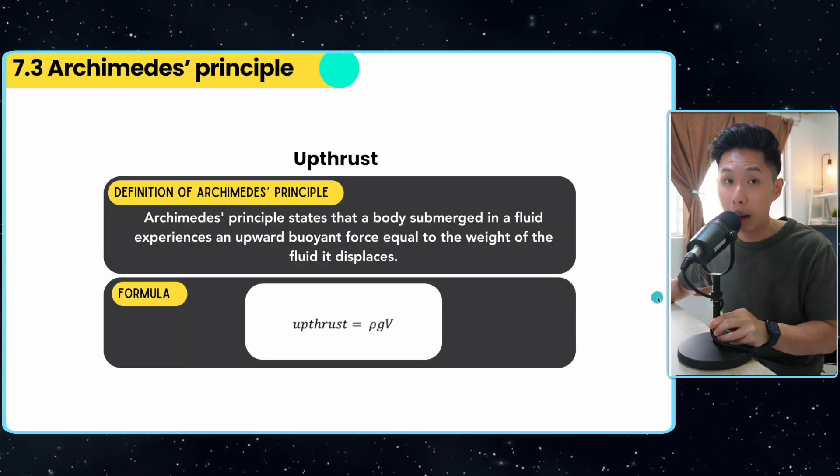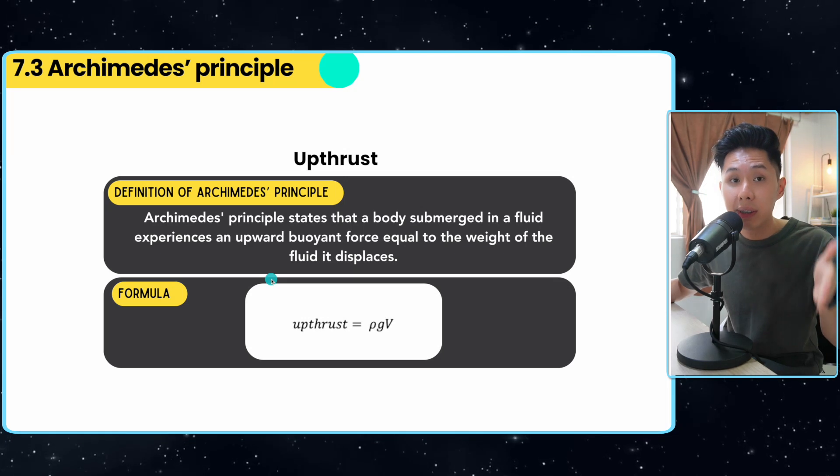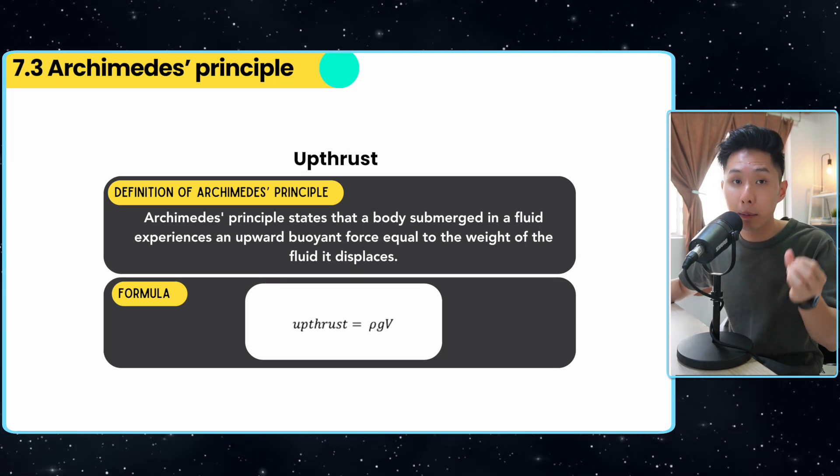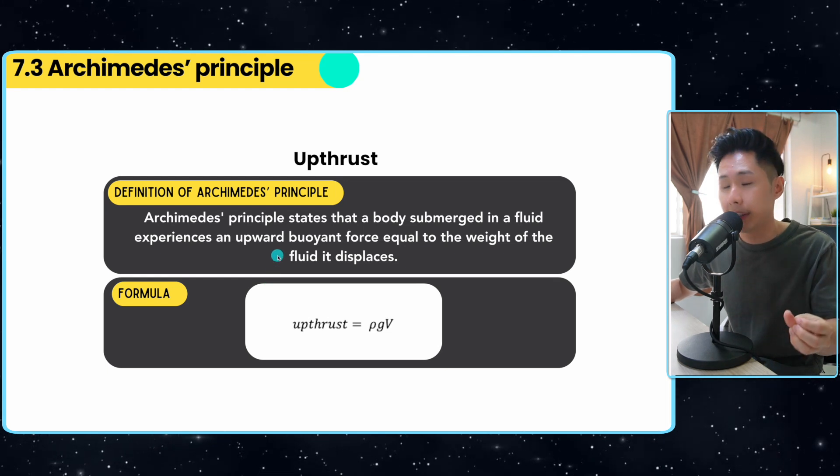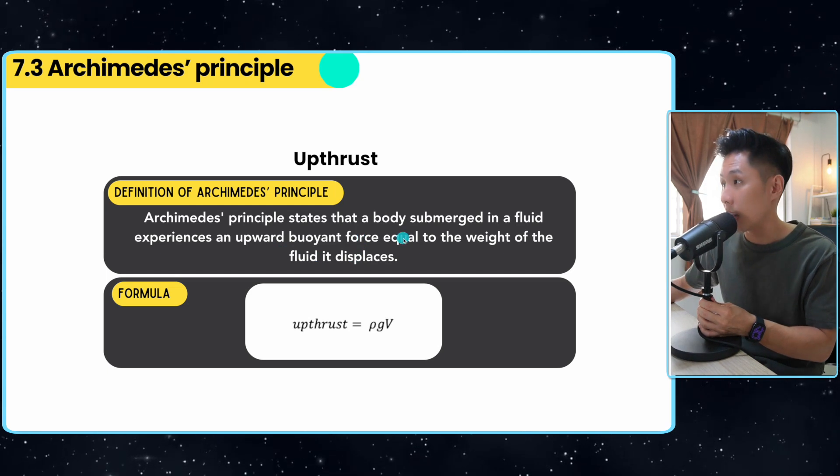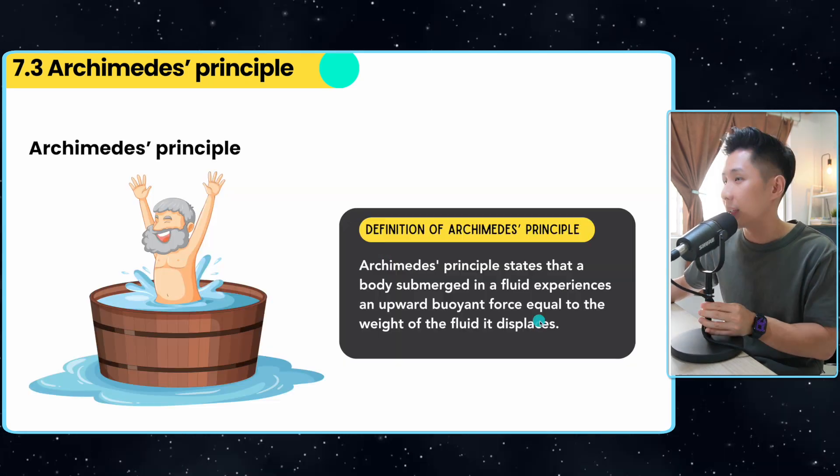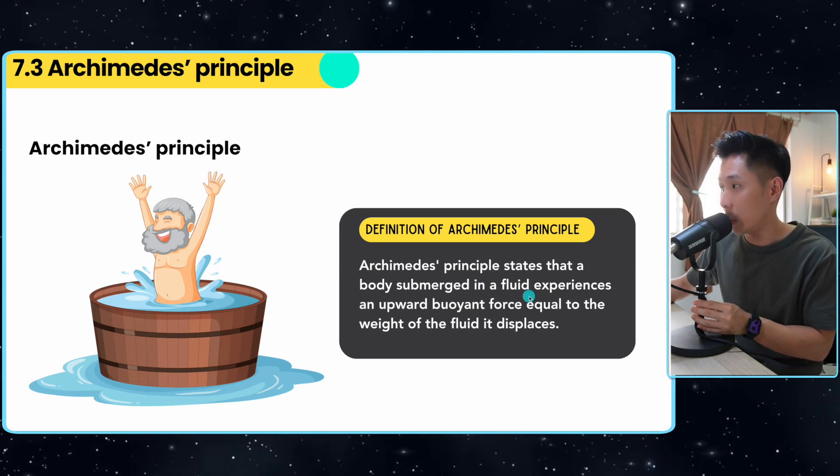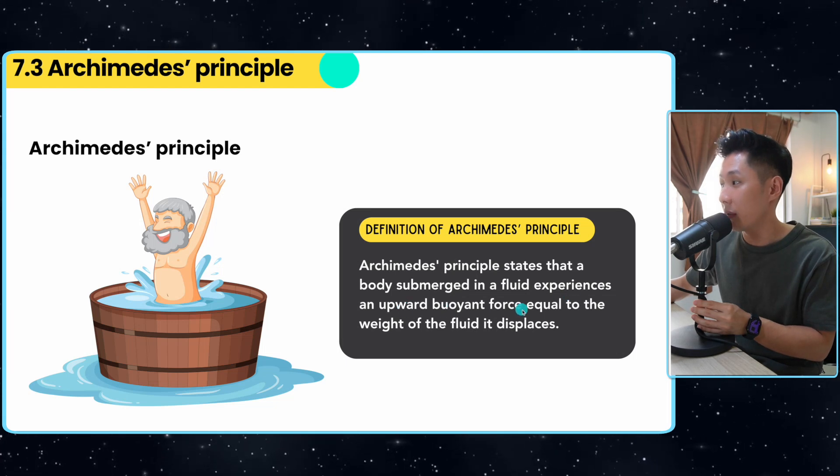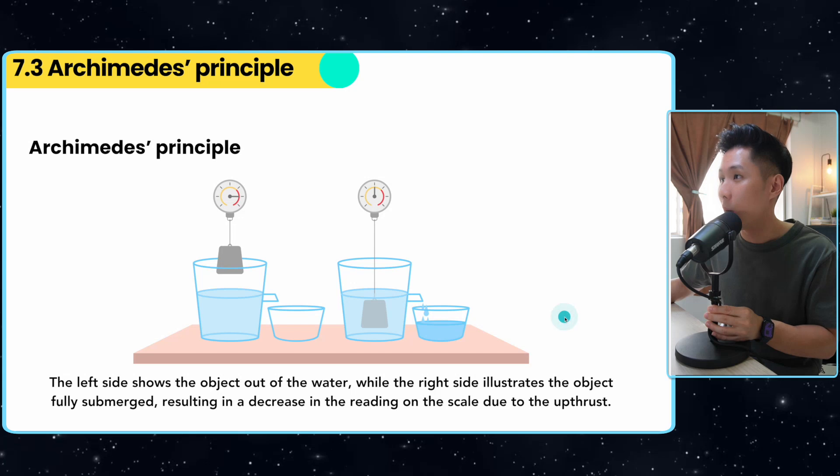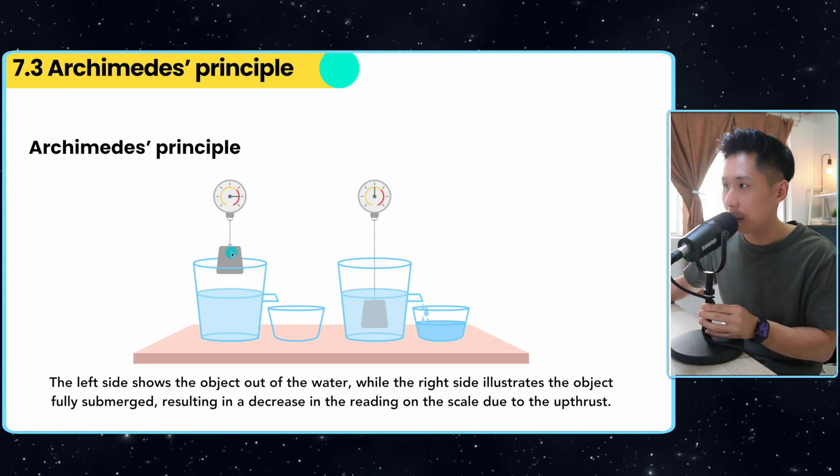Now let's look into the next concept called upthrust. Again, we use density formula to relate to pressure. Now we're going to use the concept of pressure to relate to upthrust. Upthrust is the force experienced by an object when they are in water. Let's look into the definition of Archimedes' principle. It states that a body submerged in a fluid experiences an upward buoyant force equal to the weight of the fluid it displaces. Now what do I mean by that? Look at this diagram here.